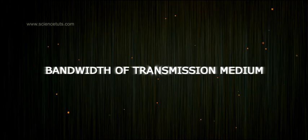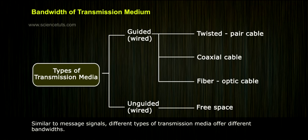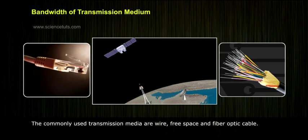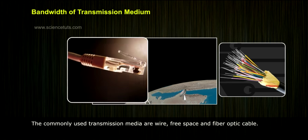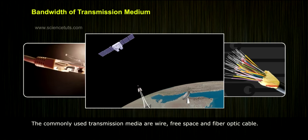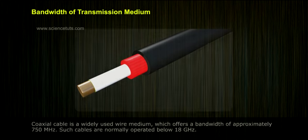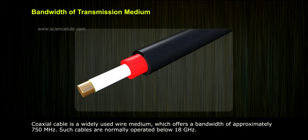The bandwidth of a transmission medium should be similar to the message signal's bandwidth. Different types of transmission media offer different bandwidths. The commonly used transmission media are wire, free space, and fiber optic cable. Coaxial cable is a widely used wire medium which offers a bandwidth of approximately 750 megahertz.